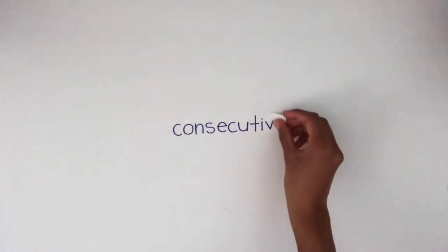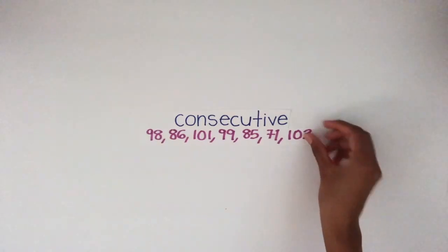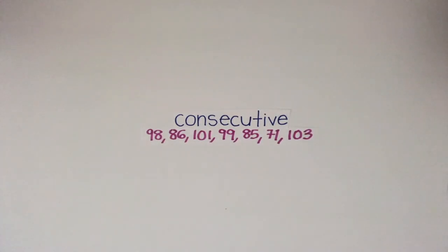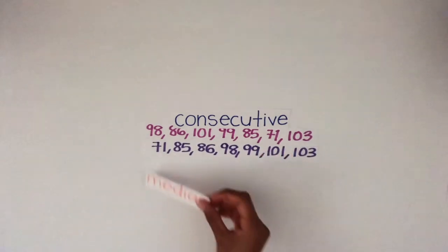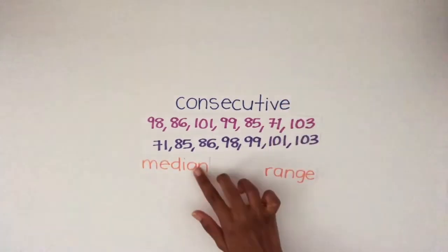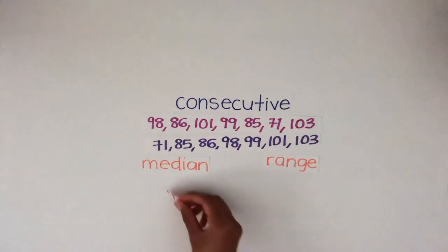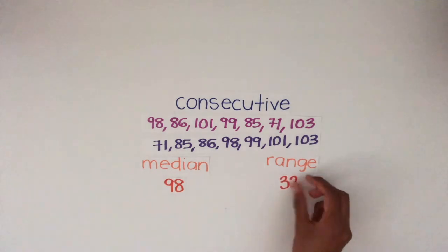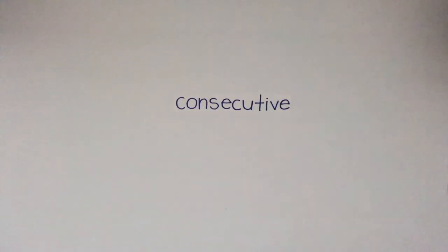The idea of consecutive numbers is so important in many mathematical operations. Especially seen in statistics, you have to order your numbers in consecutive order to determine the median, range, and so much more. And these important values that you solve can be used in everyday problems. That's why you learn them at such a young age.